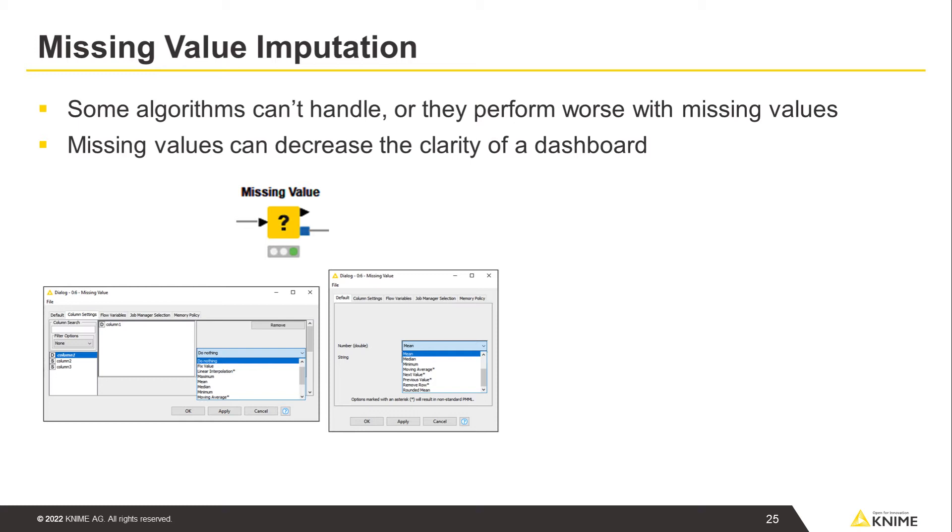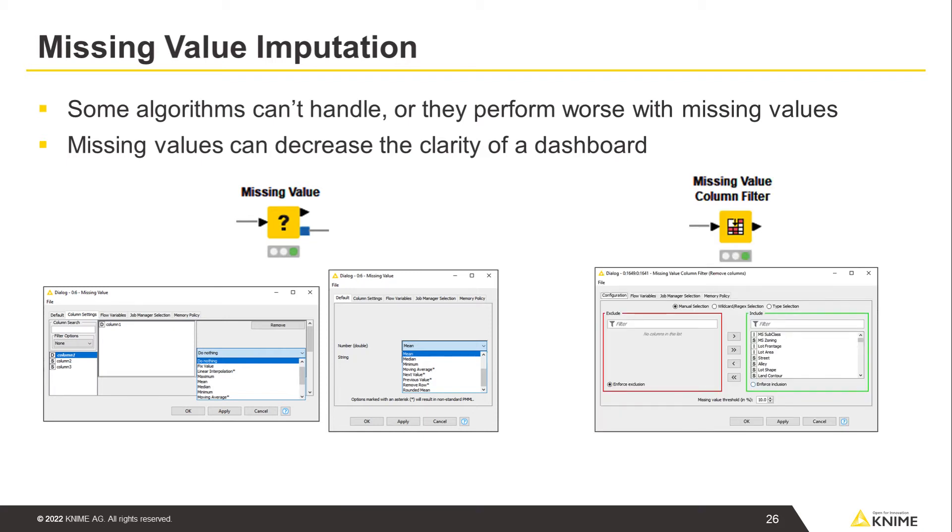There are many ways to deal with missing values. The missing value node implements most of them either by column type or column name, where the latter overwrites the first setting. More complex imputation strategies, based for example on the training of a machine learning model, must be explicitly implemented. In extreme cases, columns with more than a set percentage of missing values can be completely removed using the missing value column filter node.